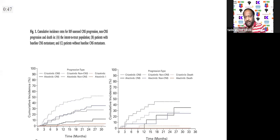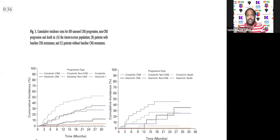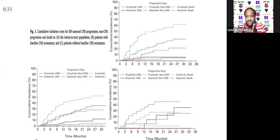The J-ALEX data, looking at the bold and dotted black lines, tells you that alectinib does much better than crizotinib in spite of having CNS disease at presentation or without CNS disease at presentation.